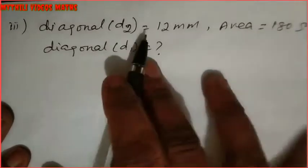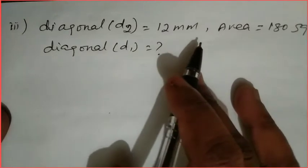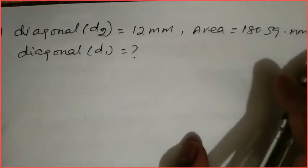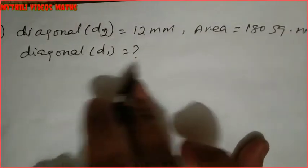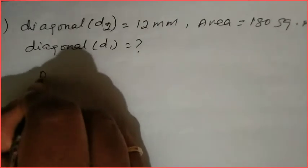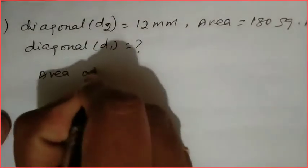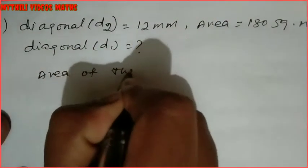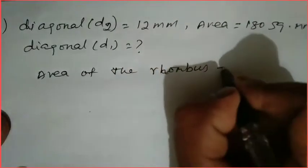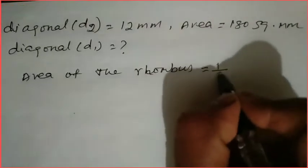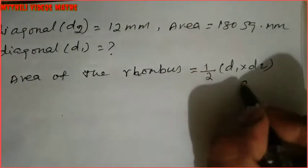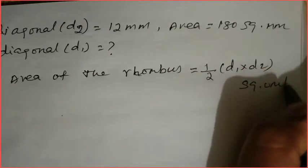Now the third subdivision: diagonal d2 = 12 millimeters, area = 180 square millimeters, and we have to find diagonal d1. Same approach — we use the formula: Area of the rhombus = 1/2 × d1 × d2, in square units.